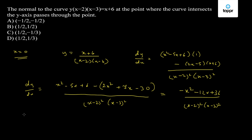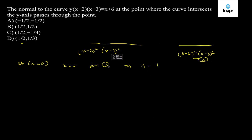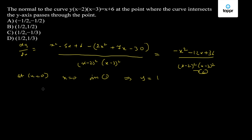At x = 0, substituting into the curve equation, we get y = 1. So the point where the curve intersects the y-axis is (0, 1).